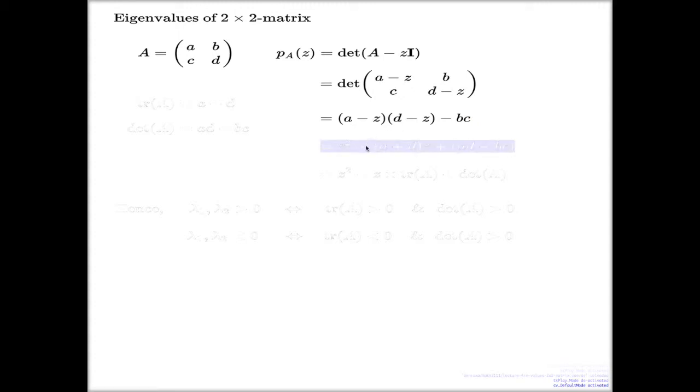I do the expansion and I see my polynomial. As easy as this. This bracket, A plus D, on one hand, it's the sum of the main diagonal entries. This is the trace.